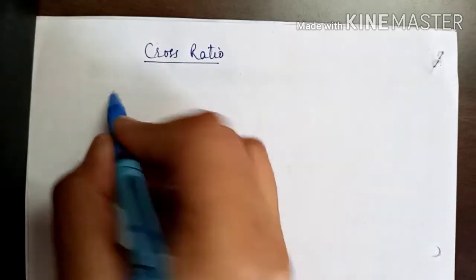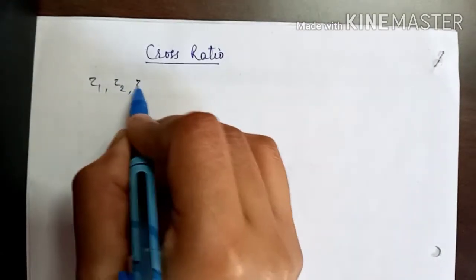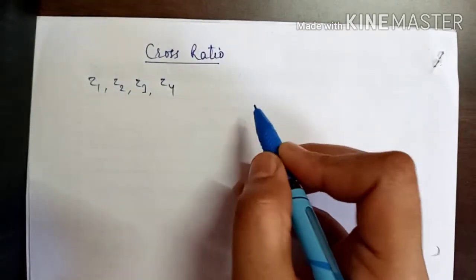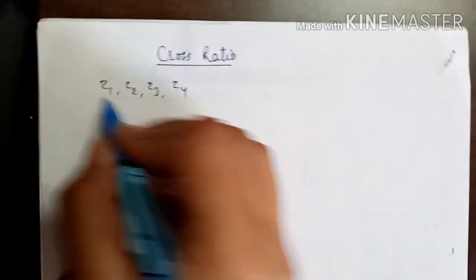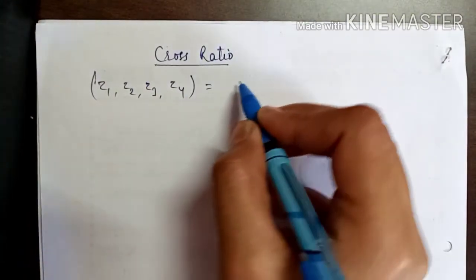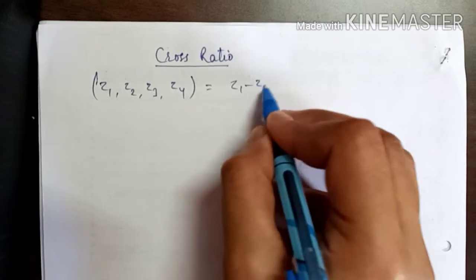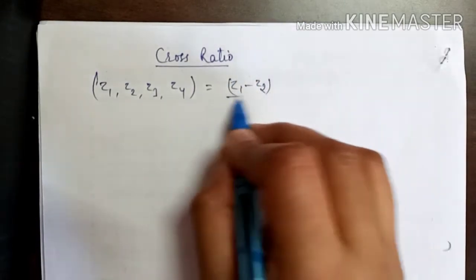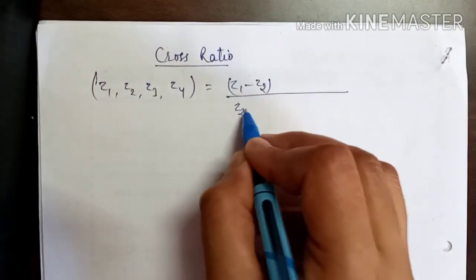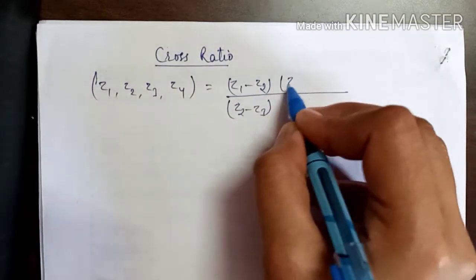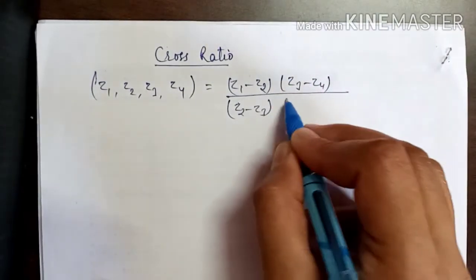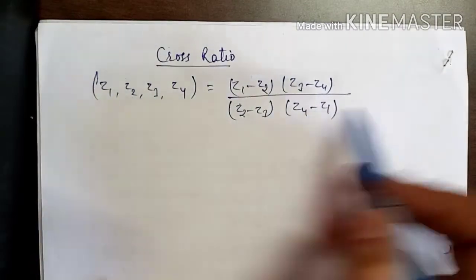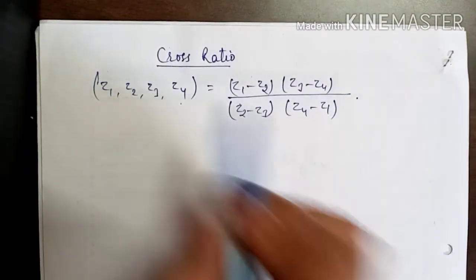If there are four points Z1, Z2, Z3, and Z4, then their cross ratio is expressible as Z1 minus Z2 divided by Z2 minus Z3, Z3 minus Z4 and Z4 minus Z1. This is defined as cross ratio of four points.